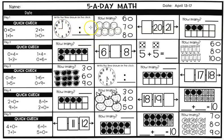Look at the clock and write the time — the hour here and the minutes here; it'll be either 00 for o'clock or 30 for half past. The next square: count the smileys and color in the six, seven, or eight. Then fill in the missing number — blank, 20, 21 — what number comes before 20? The last one for day one uses 10 frames: count the black circles and tell me how many.